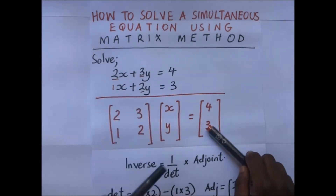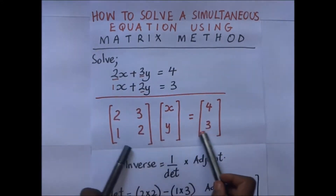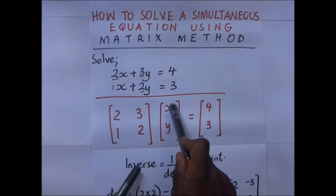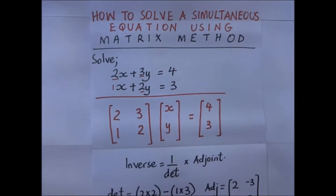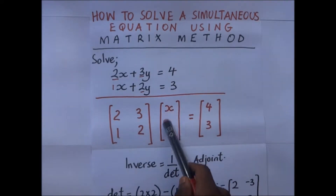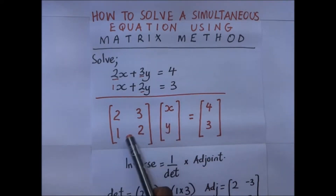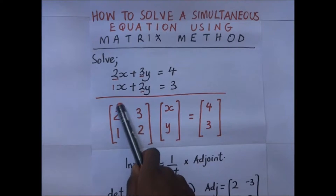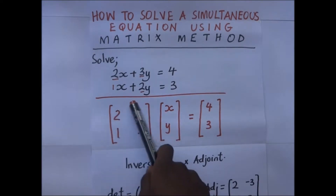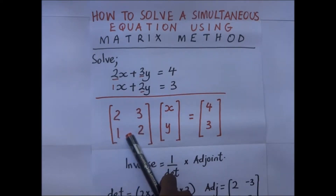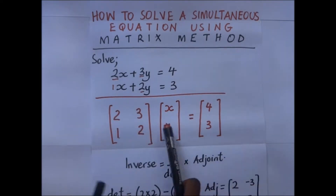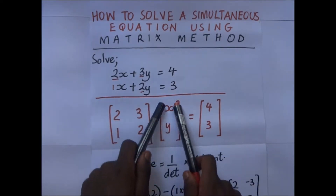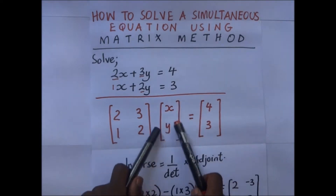So this matrix multiplied by [x; y] is supposed to give us [4; 3]. To find the values of x and y, we need to eliminate this matrix from one side so that we are left with only the unknowns.